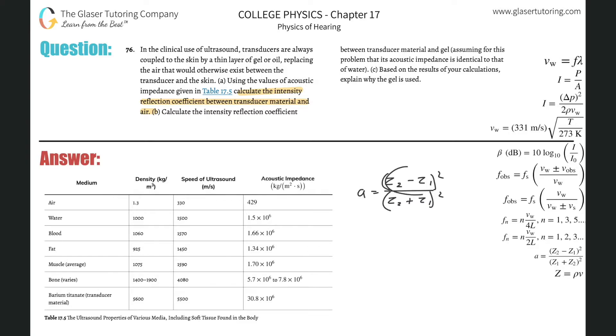So basically just find the absolute difference between the two, add them together, square both results, and you're good to go. So basically now all we got to do is we're talking about transducer material. So here's the acoustic impedance, right? And then where is the air? Here it is, right? So all we got to do is this.